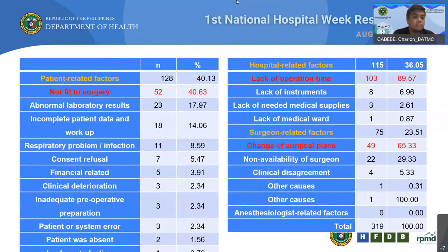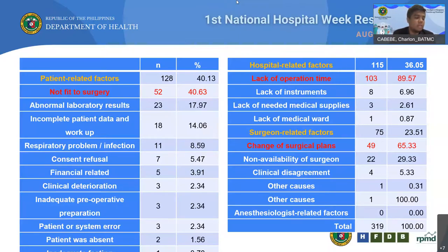General surgery accounted for most of the canceled elective procedures, followed by orthopedics and either neurosurgery or urology. The specialties with the least rates of canceled elective procedures were ENT and ophthalmology. The reasons for cases of elective surgery cancellation were mostly patient-related at 40%. Hospital-related factors accounted for 30% of cancellations while surgeon-related factors were 23.51%. There were no anesthesiologist-related factors noted in this study. Of the patient-related factors, being not fit for surgery accounted for most reasons, followed by having abnormal laboratory results and having incomplete patient data and workup.